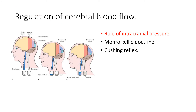When mean blood pressure decreases below 60 mmHg, blood flow to various parts of the brain decreases. When blood flow to the vasomotor center decreases, it activates the CNS ischemic response. This response produces strong sympathetic discharge, which increases blood pressure and restores blood flow to various parts of the brain.